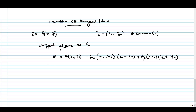Let us see an example. Suppose I am taking the same function which we have taken earlier in the first tutorial video. This is 3x squared plus 2y squared, and p0, the point at which we want to find the tangent, is (1, 1).